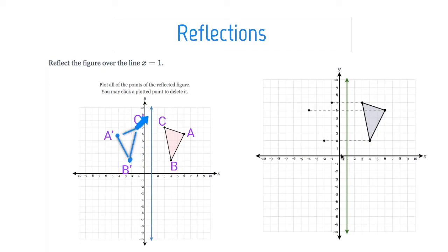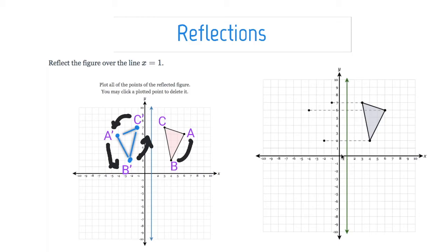Notice the order of the points: here they're going clockwise, but A prime, B prime, C prime is going counterclockwise. So if I draw in the arrows, the reflected image is going the opposite way. This is why reflections are called opposite isometries. Let's take a look at the animation of this reflection — it's just getting reflected over that line. We'll look at two more examples to help understand all these reflections.